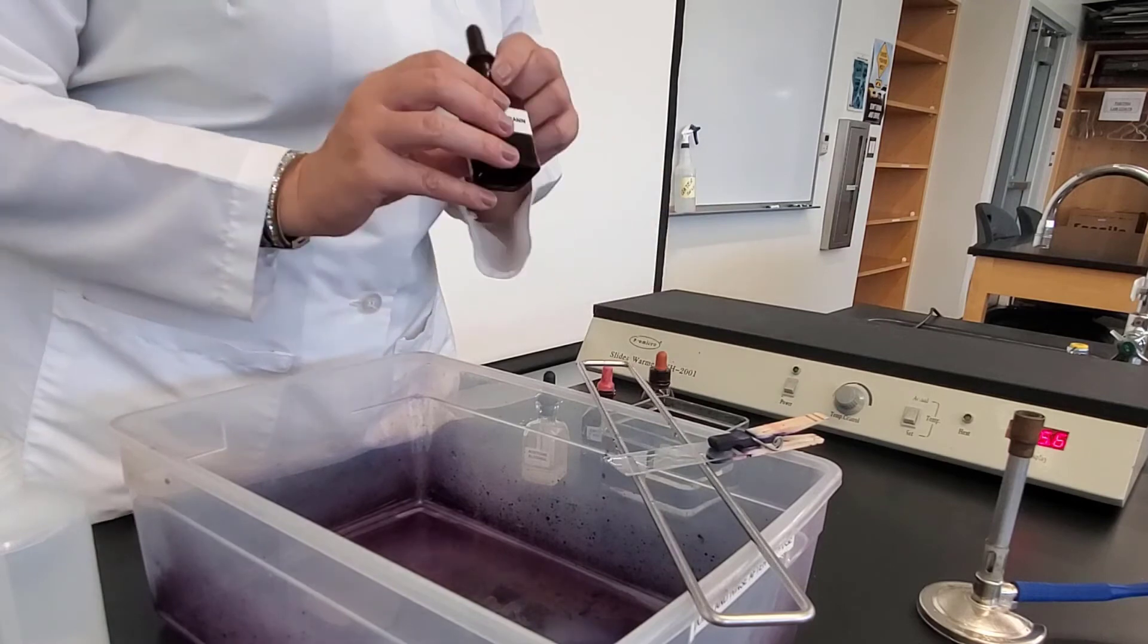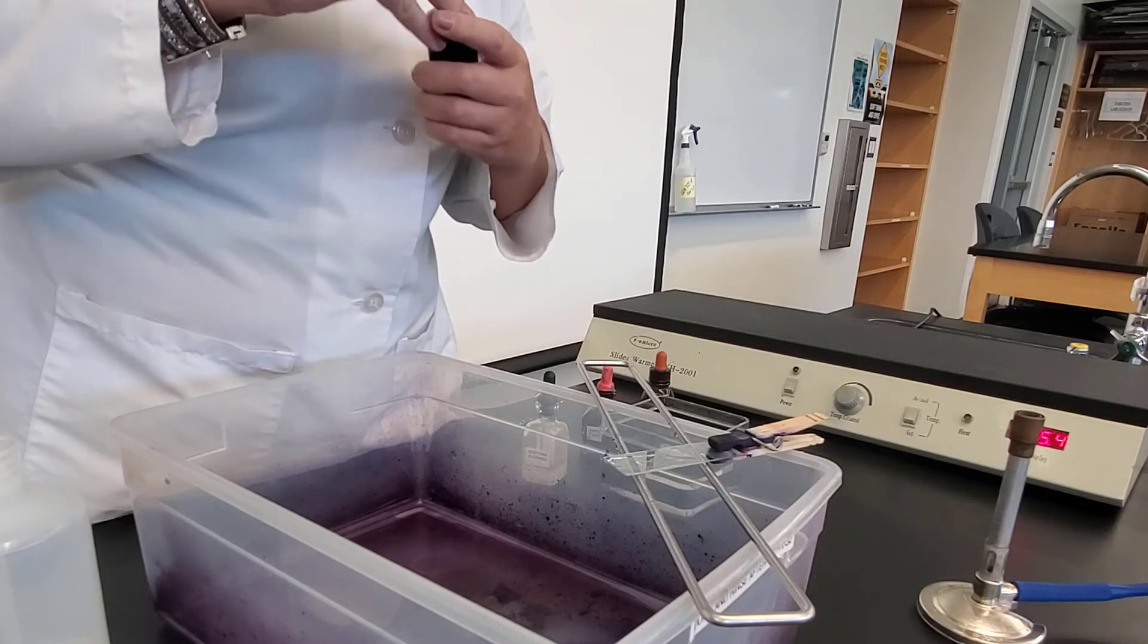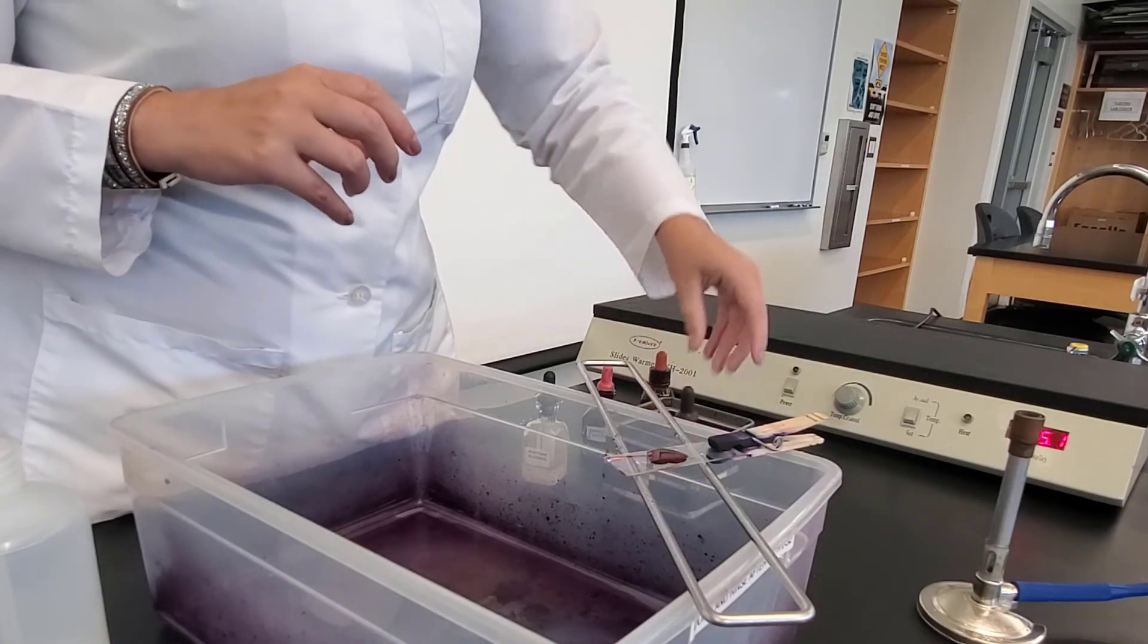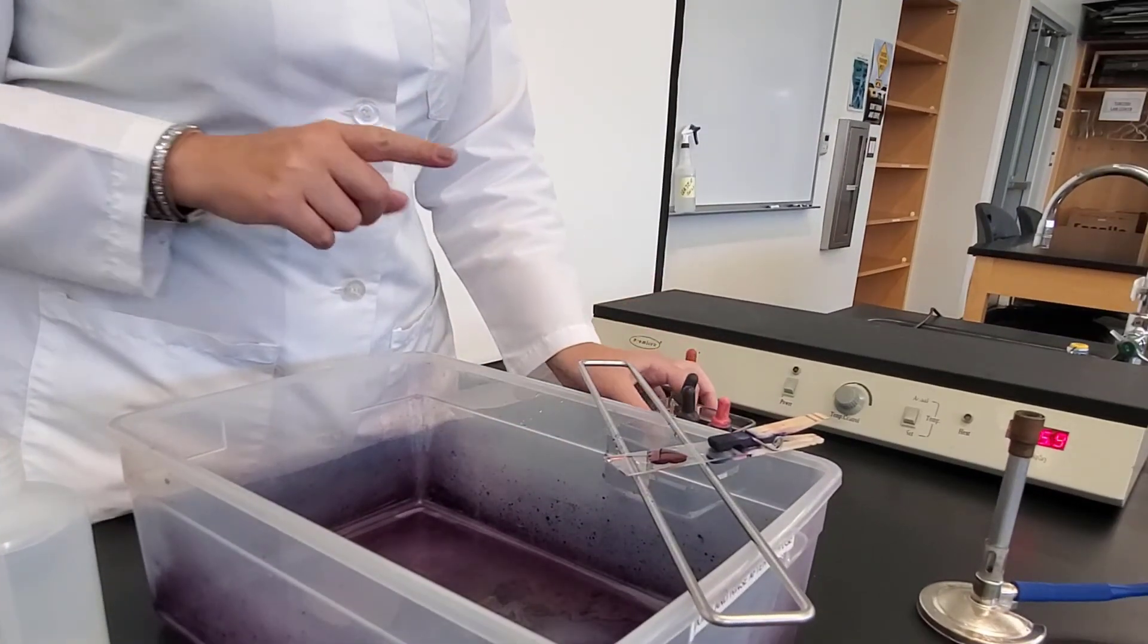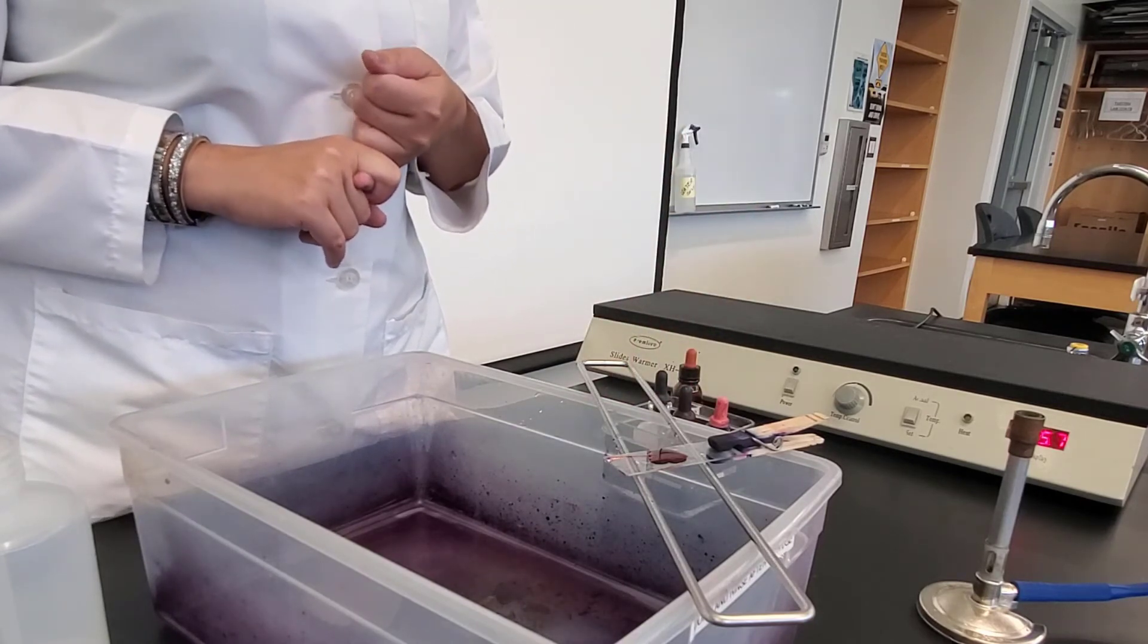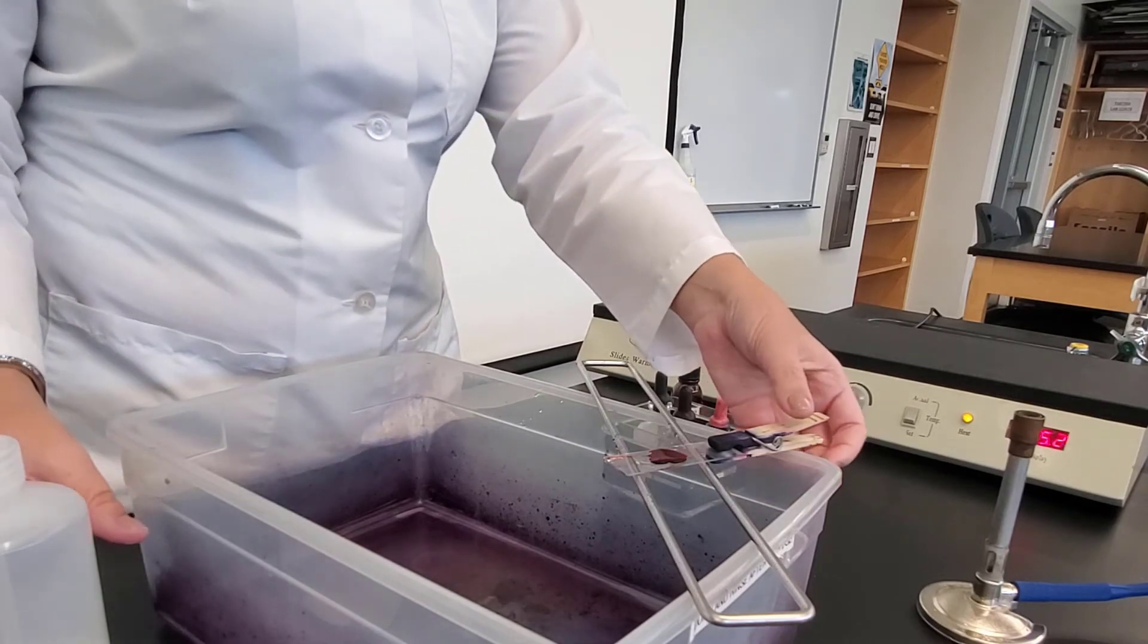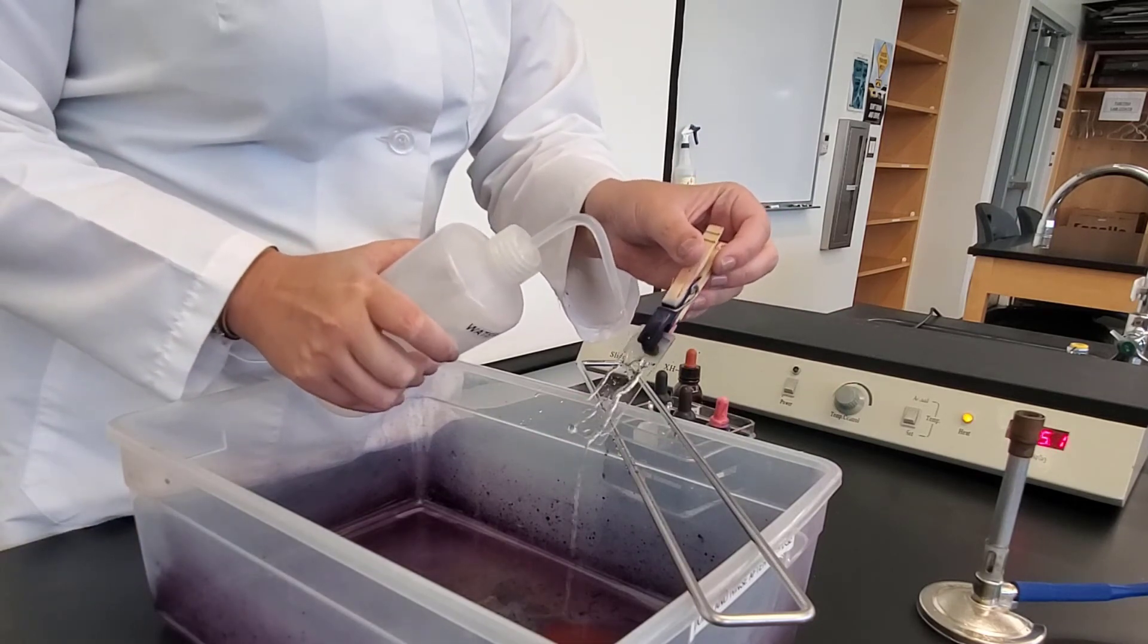And now I'm ready for my last step, which is my safranin, which is my counterstain. And so I'm going to add this to my slide for one minute. So just submerge where the bacteria is and let that sit for one minute. After the one minute, I'm going to take my slide, and I'm going to dump my safranin off. I'm going to again rinse with deionized water, and then I'm going to let my slide air dry, and then put it on the microscope and view under 1,000x magnification. So here we go. My safranin is done. And I rinse.